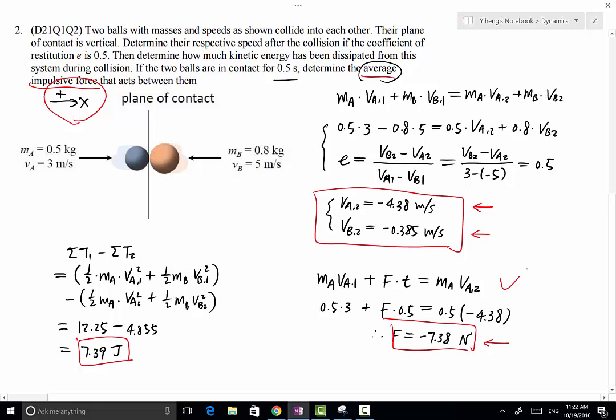If you write the equation based on the principle of impulse and momentum for ball B, you will get the same magnitude of force, except that the force will be to the right, because the force from ball A acting on ball B will be to the right.